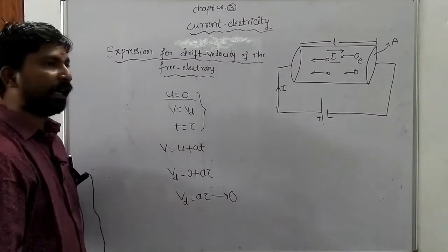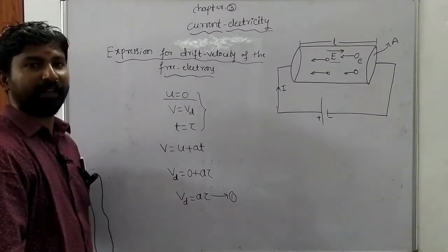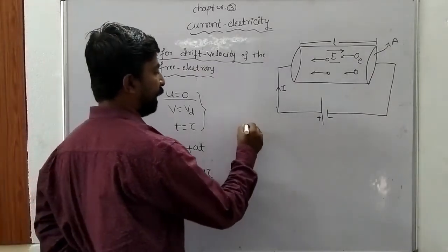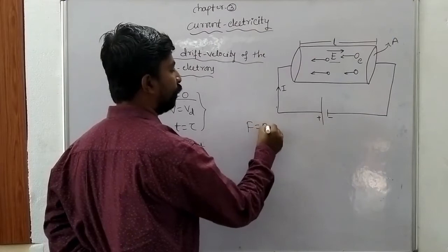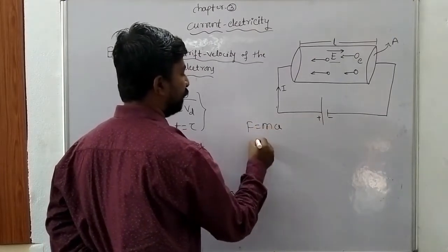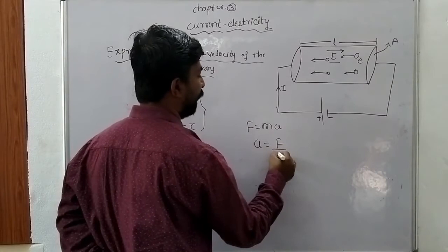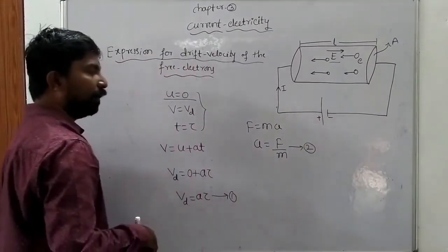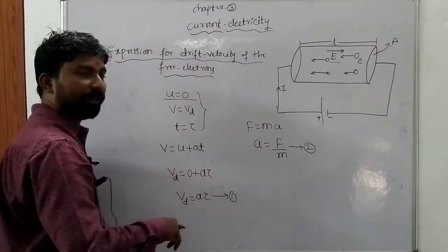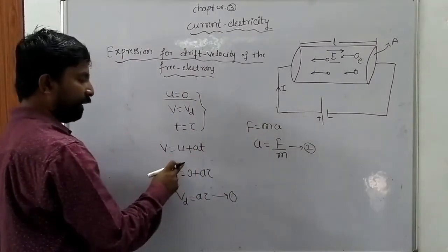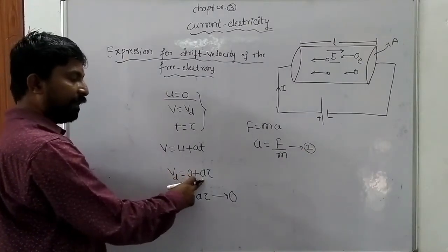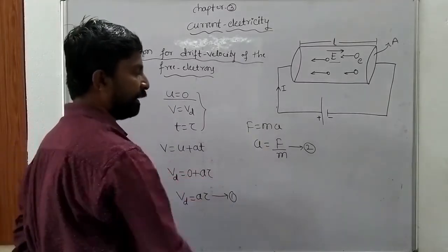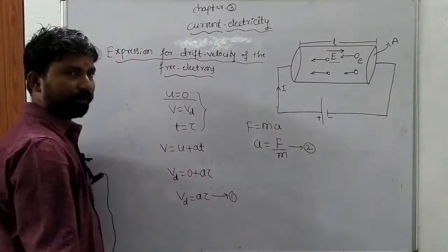Here, a is the acceleration gained by the free electrons due to the applied electric field. By Newton's second law of motion, F = ma, therefore a = F/m. This is equation number two.